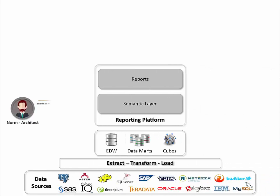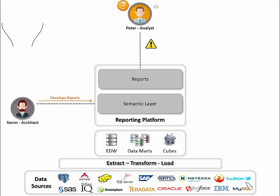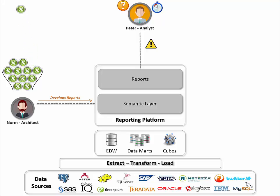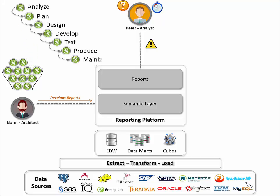Meet Norm. Norm is a very technical person that manages the data pipeline and develops reports that provide answers to business questions that an analyst like Peter has. But these reports are just a collection of answers to questions that have already been asked. Peter has a new question, so to get his answer he files a change request and it gets dropped into Norm's queue. Peter knows he's going to have to wait but doesn't understand the time-consuming waterfall process Norm has to go through with every change request.